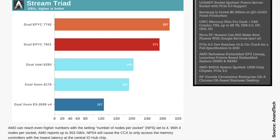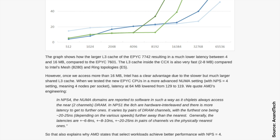Here's the Anandtech review, which is incredibly thorough. When they measured memory bandwidth, they said AMD can reach even higher bandwidth with the setting number of nodes per socket to 4. NPS4 will cause the CCX to only access the memory controllers with the lowest latency at the central IO die. Later in the same review, they have more details: in NPS4, the NUMA domains are reported to software such that chiplets always access the near two channels of DRAM. The latency varies by pairs of DRAM channels, with the furthest one being 20 to 25 nanoseconds further away than the nearest, with steps of +6–8ns, +8–10ns, and +20–25ns.